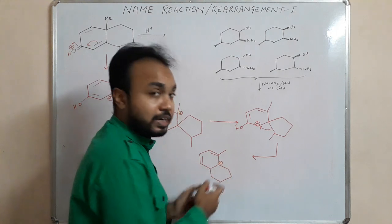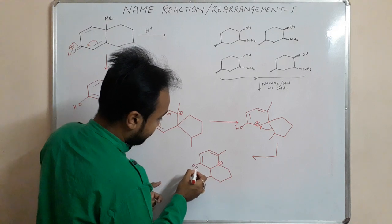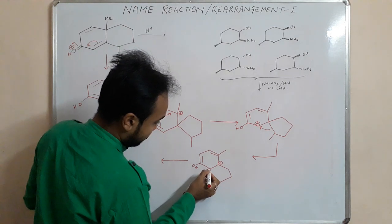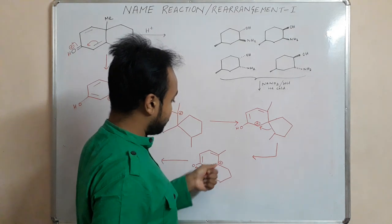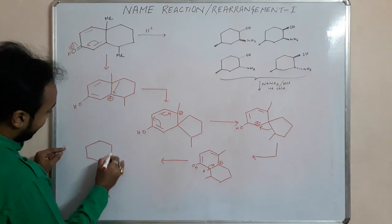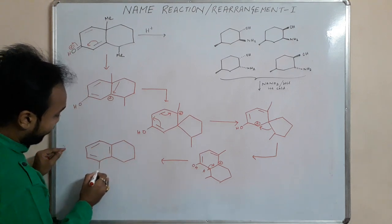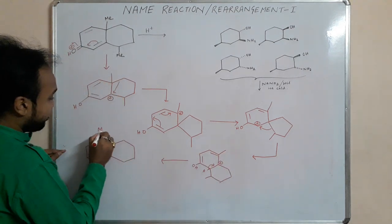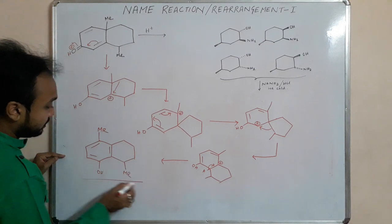It is stable because it is a tertiary carbocation. Then, a proton is lost to form a more substituted double bond. Rearranging the structure: we have a double bond, an OH group, a methyl group in the para position, and another methyl group beside the OH. This is our final product of the dienone-phenol rearrangement.